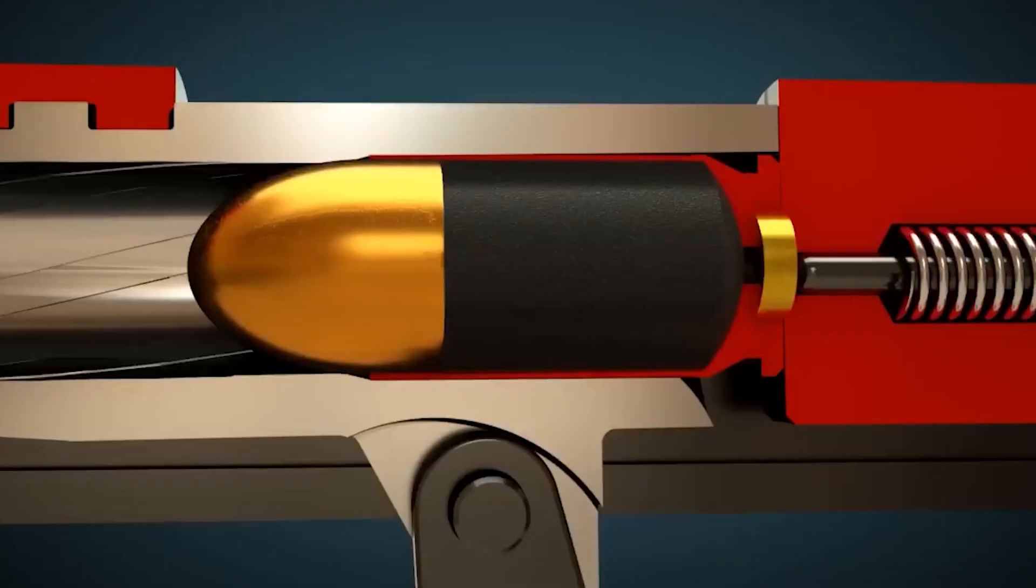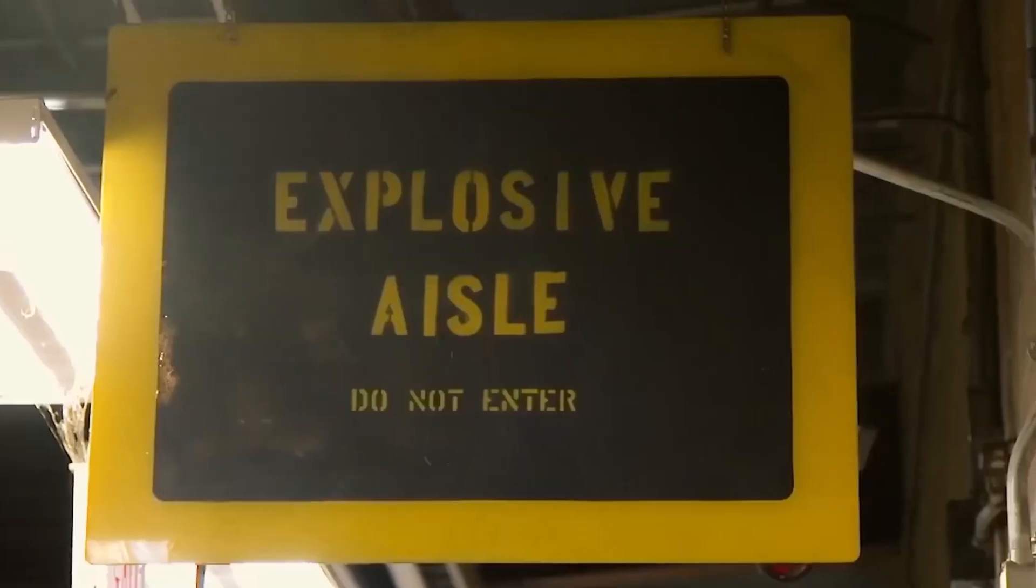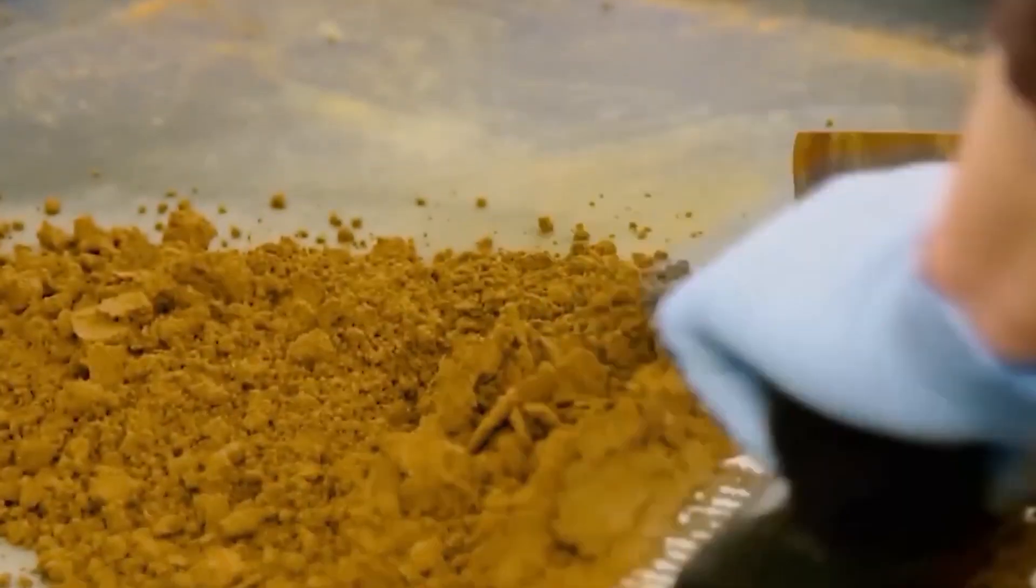Because of the hazardous nature of primer compounds, this part of ammunition manufacturing involves the most stringent safety protocols. Workers in primer areas wear special clothing, production quantities are limited, and the facilities incorporate blast walls and venting systems to minimize risk in case of accidents.